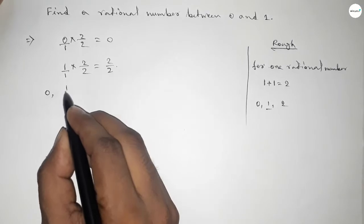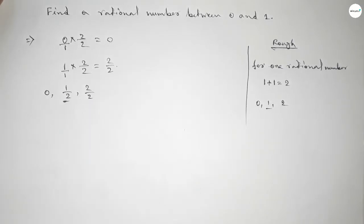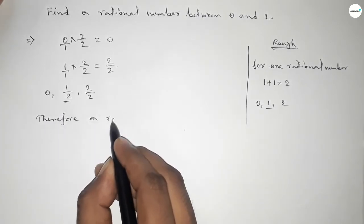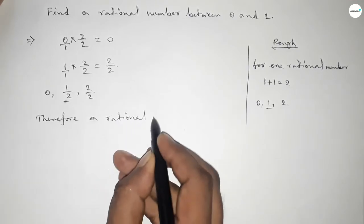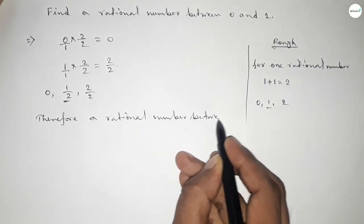So here all the rational numbers are 0, 1 over 2, and 2 over 2. And this is the required one rational number between 0 to 1. So therefore, a rational number between 0 to 1 is half, or 1 by 2, or 1 over 2.